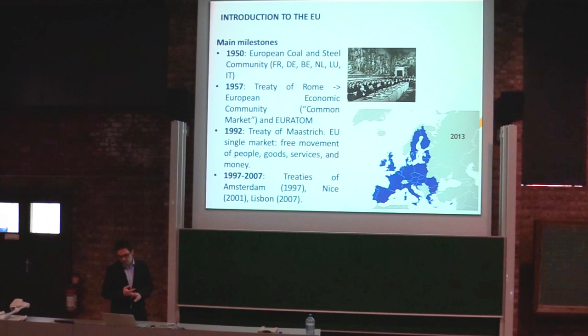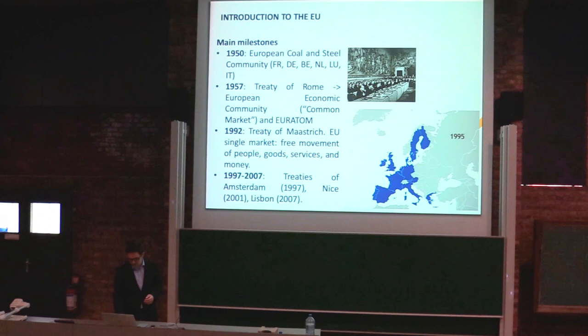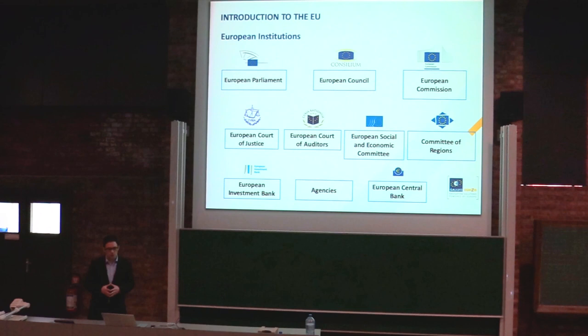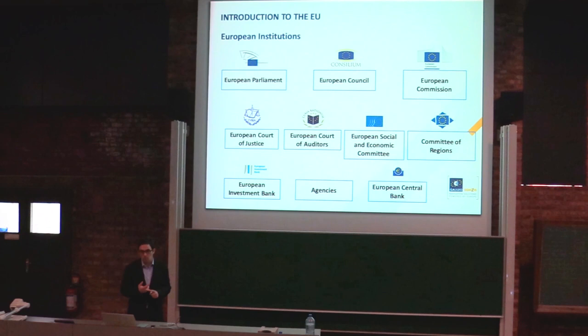You can see how countries have at different times joined the EU — the next step will be to remove the UK, unfortunately. The main European institutions are the Parliament, the Council, and the Commission. The European Commission is the executive arm of the EU — it writes the regulations and manages the funds. I work for the European Commission.